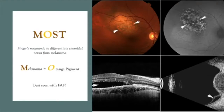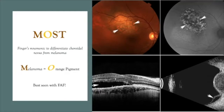On the top left, you see gross orange pigment. It's not hard to see that with indirect ophthalmoscopy and color imaging. However, on the top right, you can see that fundus autofluorescent imaging highlights and hyper-autofluoresces the orange pigment. When you have small amounts of orange pigment, sometimes the fundus autofluorescent images will help you find and diagnose its presence.